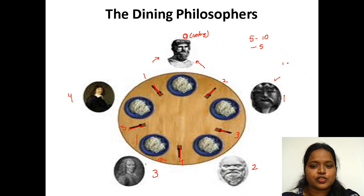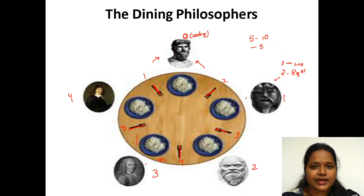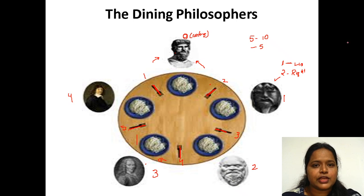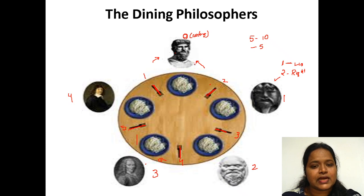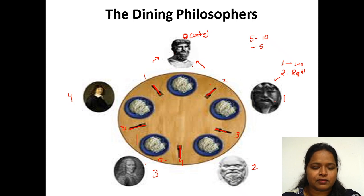First he has to lift the left chopstick, and second the right chopstick. He can eat only when he has both chopsticks. Suppose person 0 is eating and philosopher 2 also wants to eat — can he eat at the same time? No, because chopstick 2 is already under the 0th philosopher. Only the right chopstick is available, so philosopher 2 is unable to eat. That is how we have to provide synchronization among the five philosophers.